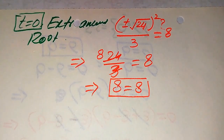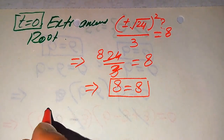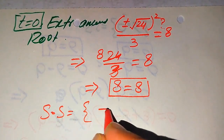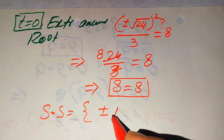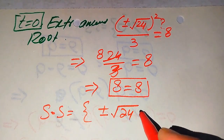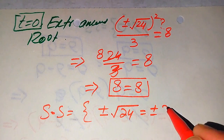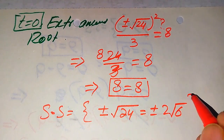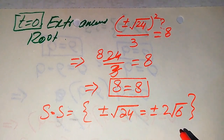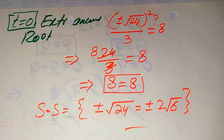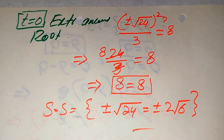We conclude that the solution set of the given equation is plus or minus 2 times square root of 6. This is the final answer. Thank you for watching this video — please subscribe to my channel for more exciting videos.